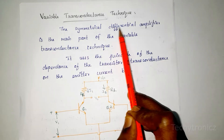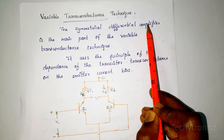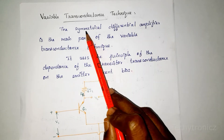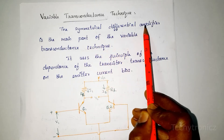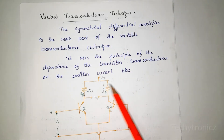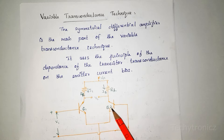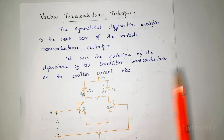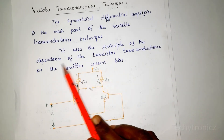In the variable transconductance technique, we are using the symmetrical differential amplifier — this is the main part of this technique. Here in the differential amplifier circuit we are using two transistors, Q1 and Q2, and both transistors have the same characteristics, which makes it a symmetrical differential amplifier.